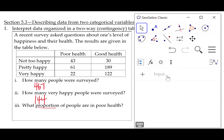Let's first figure out how many people are in poor health. I will add up the numbers that are in the poor health column: 43 plus 61 plus 22, and that gives me 126 individuals. Then to compute the proportion, I'm going to take that 126 and divide by 467, which is the total number of individuals that were surveyed. I get a proportion of 0.2698.